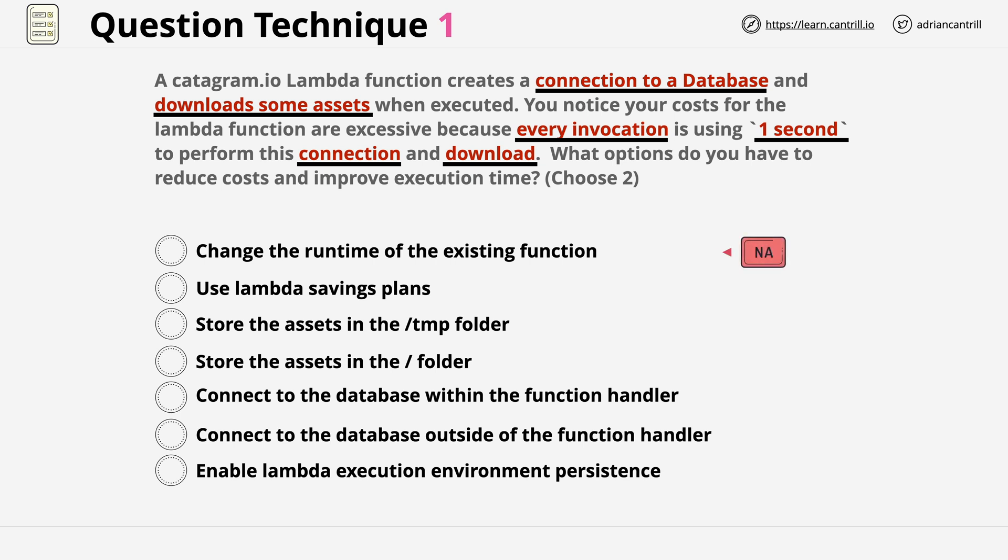The top answer immediately jumps out because you can't change the runtime of an existing function. Without considering anything else, this one self-excludes. It eliminates itself because it can never be correct. The second one is an example of something I see in many exams where there's an answer which seems plausible but it doesn't fix the root cause. In this particular case, it's telling us to use a Lambda savings plan. While a savings plan does in theory offer cost savings, it doesn't fix the root cause. And there isn't actually such a thing as a Lambda savings plan.